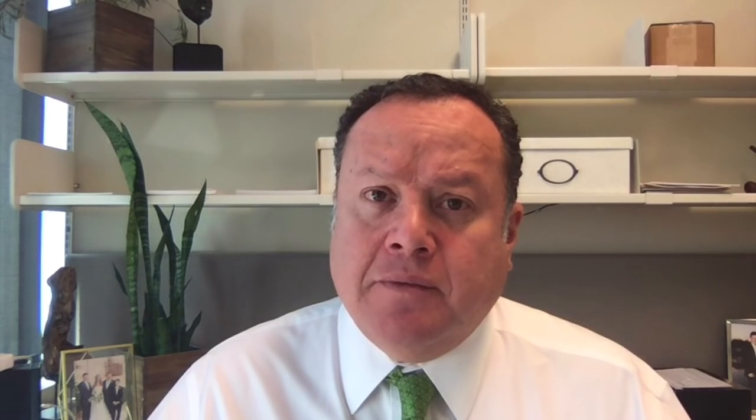These patients can respond very well to treatments such as the drugs we call IMIDs — that includes lenalidomide and pomalidomide. It's particularly common in the elderly. There's some studies, including one from Dr. Ross in the UK, that found up to 70% of patients in their 70s and 80s will have this form of myeloma. If you take all myelomas, it's only about half of cases.